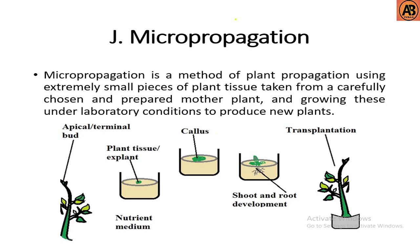Finally, micro-propagation is another type of asexual propagation. It is a method of plant propagation using extremely small pieces of plant tissue taken from a carefully chosen and prepared mother plant, grown under laboratory conditions to produce new plants. The process involves: first, preparing nutrient media; second, inserting plant tissue or explant into nutrient media; third, callus formation; fourth, shoot and root development; and finally, transplantation. These are all the types of asexual propagation covered in this video — thanks for watching.